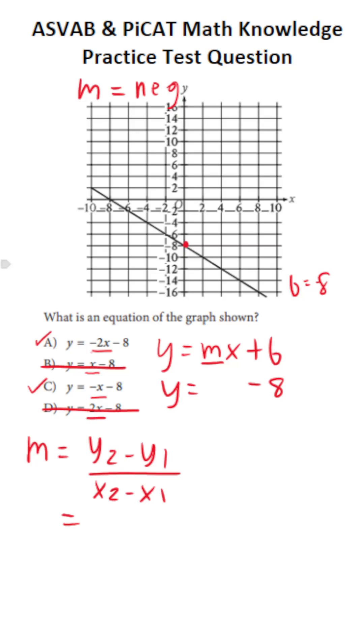We get those values from any two points on this line. So right here is the point negative 8, 0. I'm going to let that be x1, y1. And right here at our y-intercept is the point 0, negative 8. I'm going to let that be x2, y2. So let's just plug those values in and get our slope.